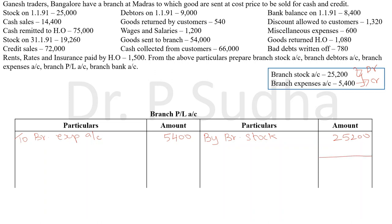Tally the branch profit and loss account: the credit total is more at 25,200. The balancing figure is 19,800, which is transferred to general profit and loss account. This is how we work out branch accounts under the stock and debtors method when goods are sent at cost price. I hope you understood how to work out the problem. Thank you for watching.